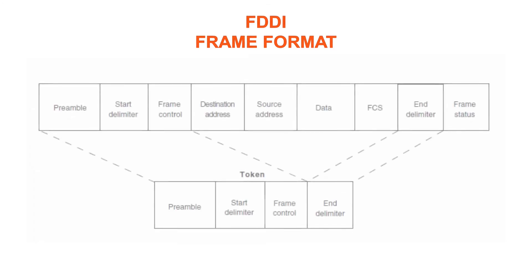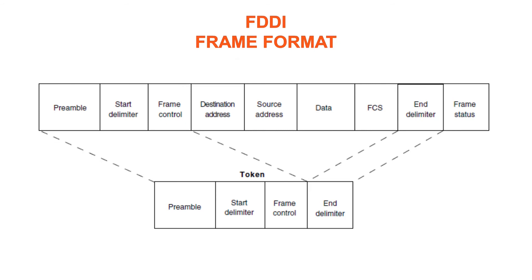The FDDI frame format is similar to the format of a token ring frame. This is one of the areas in which FDDI borrows heavily from earlier LAN technologies such as token ring. FDDI frames can be as large as 4,500 bytes. The preamble gives a unique sequence that prepares each station for an upcoming frame. The start delimiter indicates the beginning of a frame by employing a signaling pattern that differentiates it from the rest of the frame. The frame control field indicates the size of the address fields and whether the frame contains asynchronous or synchronous data, among other control information.